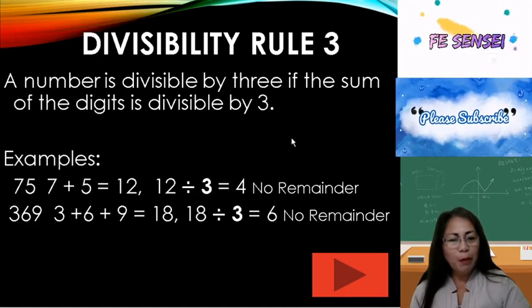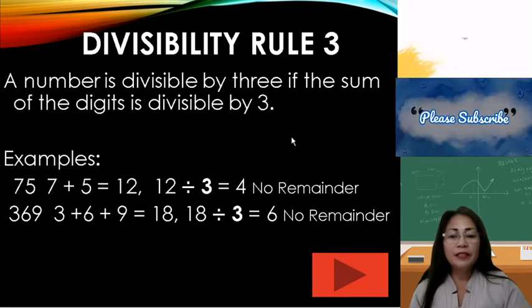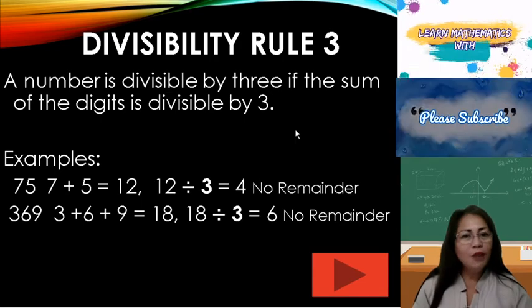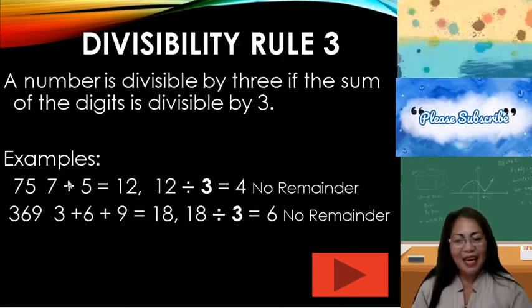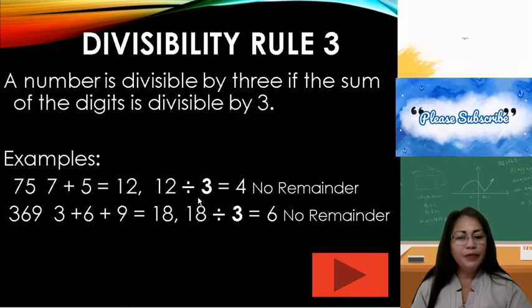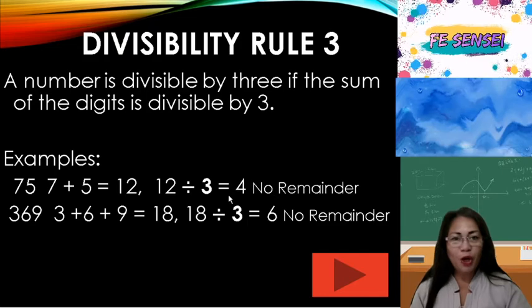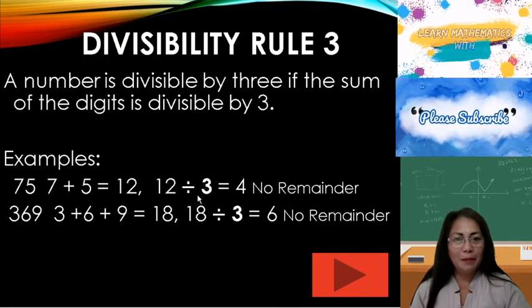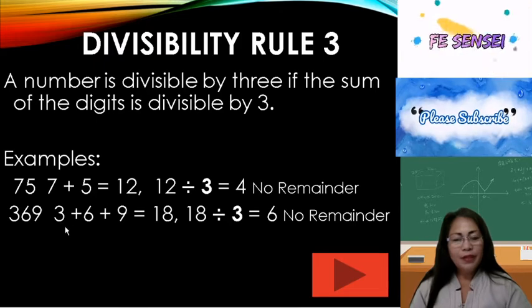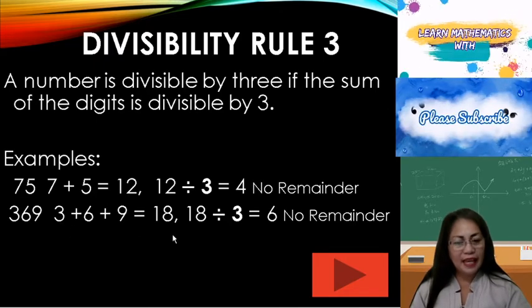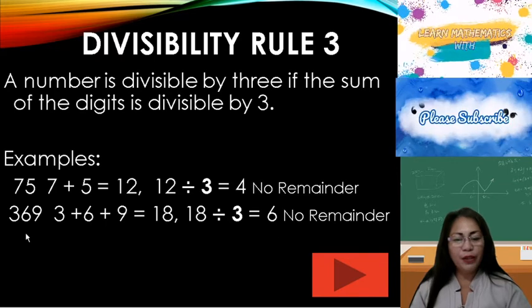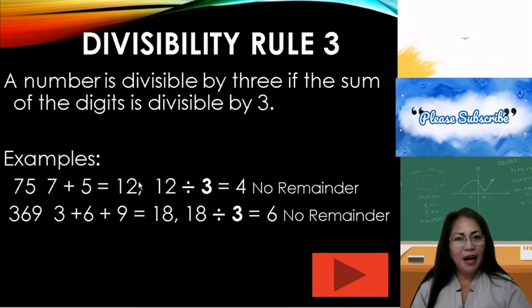Divisibility rule 3: A number is divisible by 3 if the sum of the digits is divisible by 3, or if the sum of the digits is a multiple of 3. Example: 75 — 7 plus 5 equals 12; 12 divided by 3 equals 4, no remainder, therefore 12 is divisible by 3. Another example: 369 — 3 plus 6 plus 9 equals 18; 18 divided by 3 equals 6, no remainder, therefore 369 is divisible by 3.